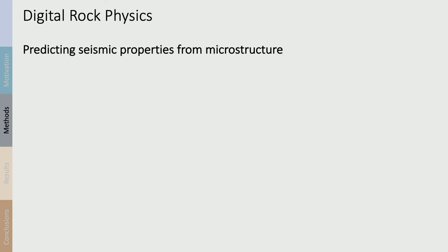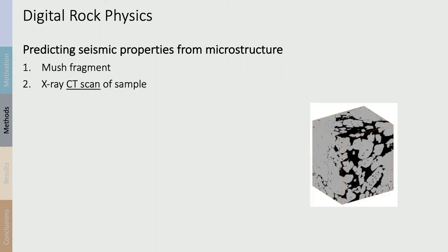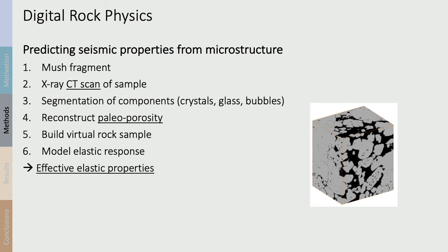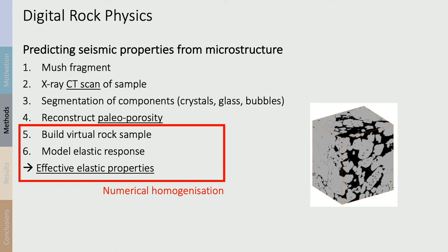So how do we do better? One way is to use what we know about the microstructure of the melt to predict the seismic properties. First we need to recover and identify rock samples that contain mush fragments — this is non-trivial. We then obtain a CT scan of the sample with X-rays, segment the image into different components — different crystal phases, glass, and bubbles — and reconstruct the paleoporosity. We then have a virtual rock sample and can computationally model its elastic response to get the effective elastic properties. The last two steps are called numerical homogenization.